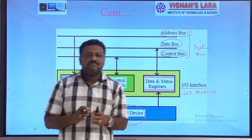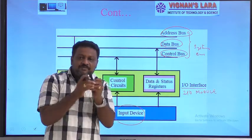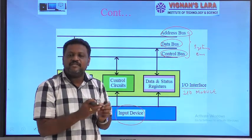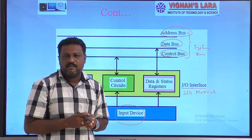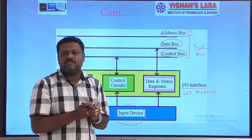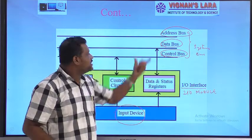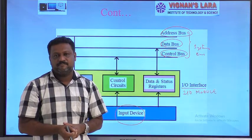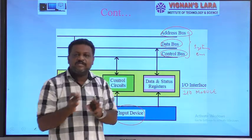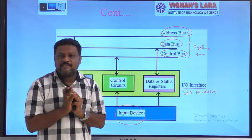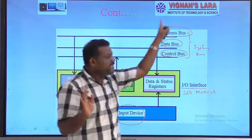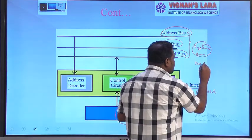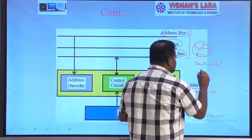If your system bus has N number of lines, those N lines are split into three different partitions, each with a dedicated function. Those lines can perform only that particular function — if a group is called the address bus, those lines carry only addresses. The data bus carries only data, and the control bus carries only control signals. We can call this system bus a dedicated bus.